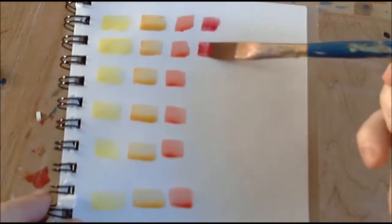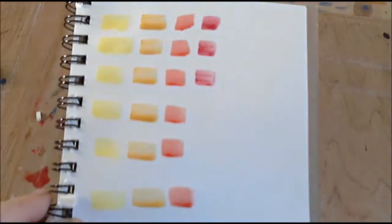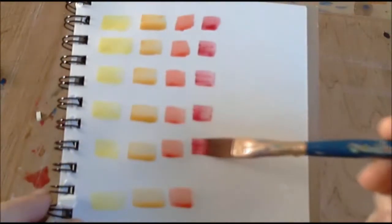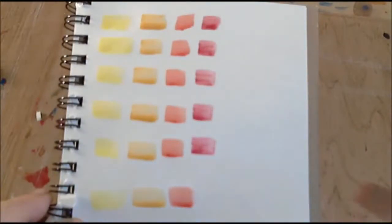As you can see, I am painting each colour a few times and making columns on my paper. This is so that each combination can be clearly seen and compared.